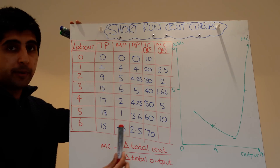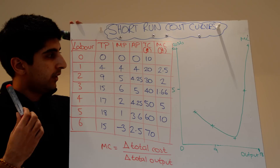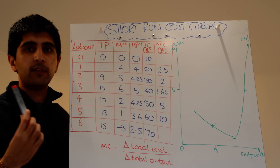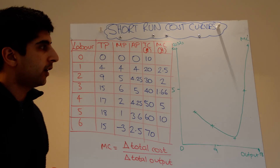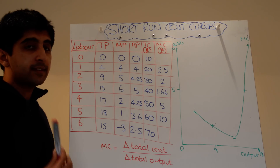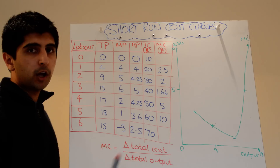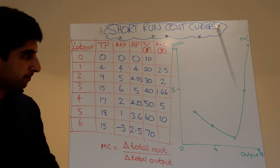I've got this table up again, which is exactly the same table as I used to explain the law of diminishing returns, but I've extended it to include total costs and marginal costs.